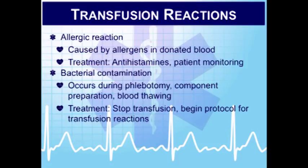If any serious reaction occurs, stop the transfusion immediately. If bacterial contamination is suspected, save the blood product, tubing, and all equipment used — these go to the blood bank for investigation. Manage shock with fluid support and possibly vasopressors. Patients may be started on broad-spectrum antibiotics, cultured to identify the organism, then switched to a specific antibiotic. Steroids may also be needed.